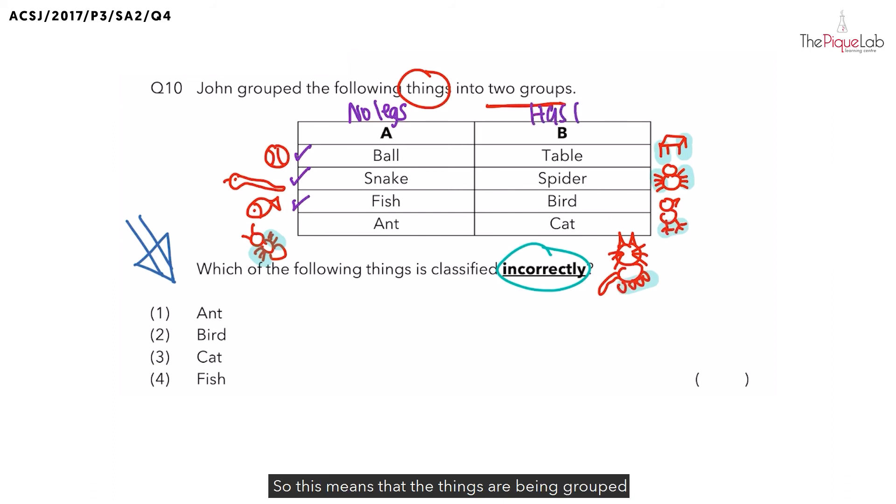So this means that the things are being grouped by whether they have legs or do not have legs. And I'm sure at this point, you would be able to tell me which thing has been classified incorrectly, right? It would be the ant because the ant has legs. And the answer for this question would be option one.